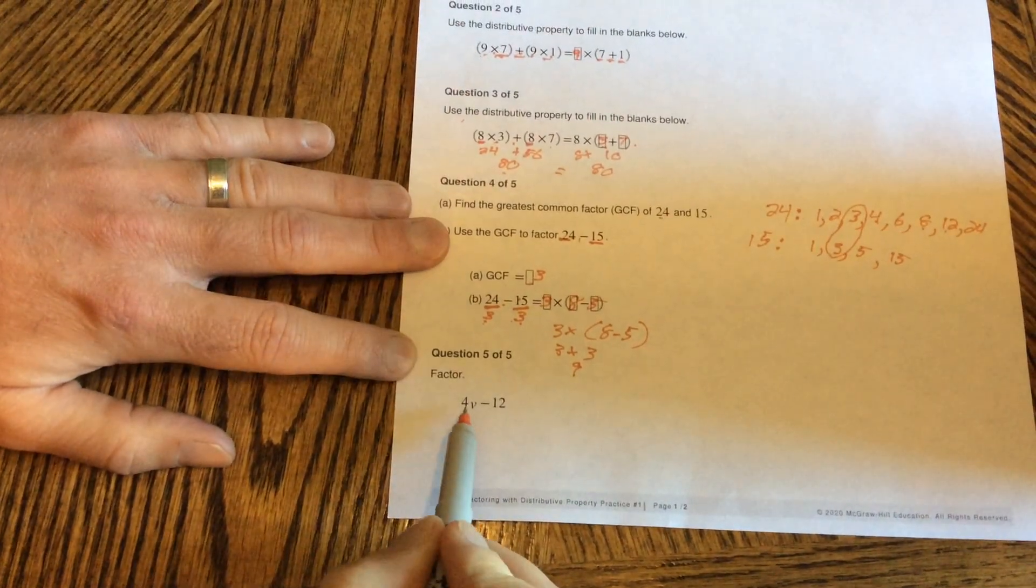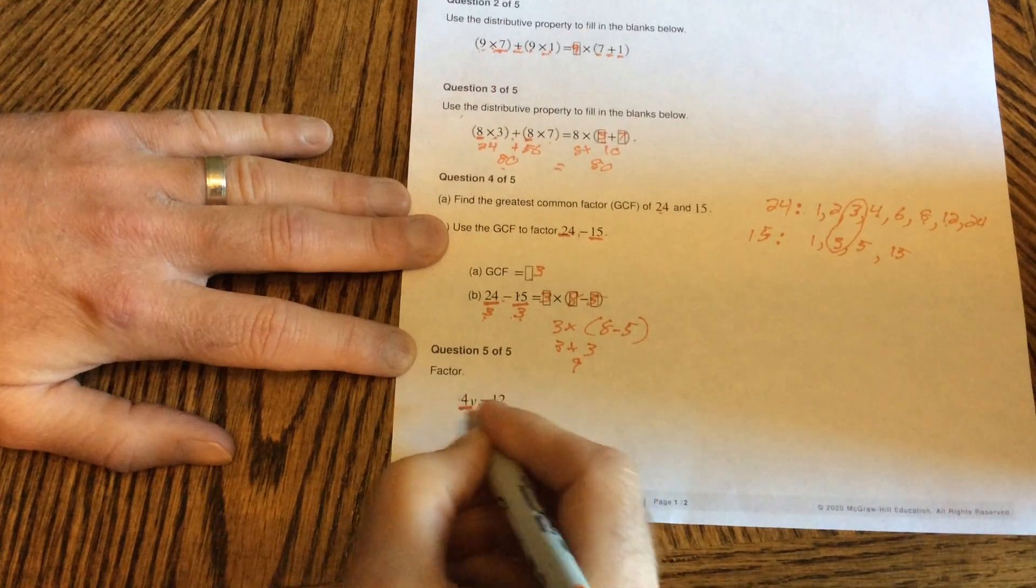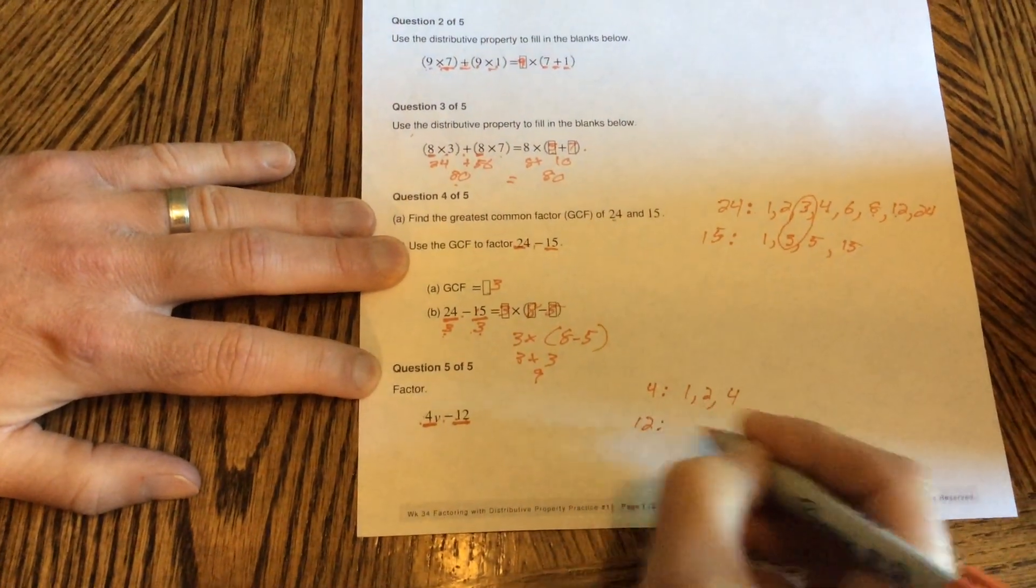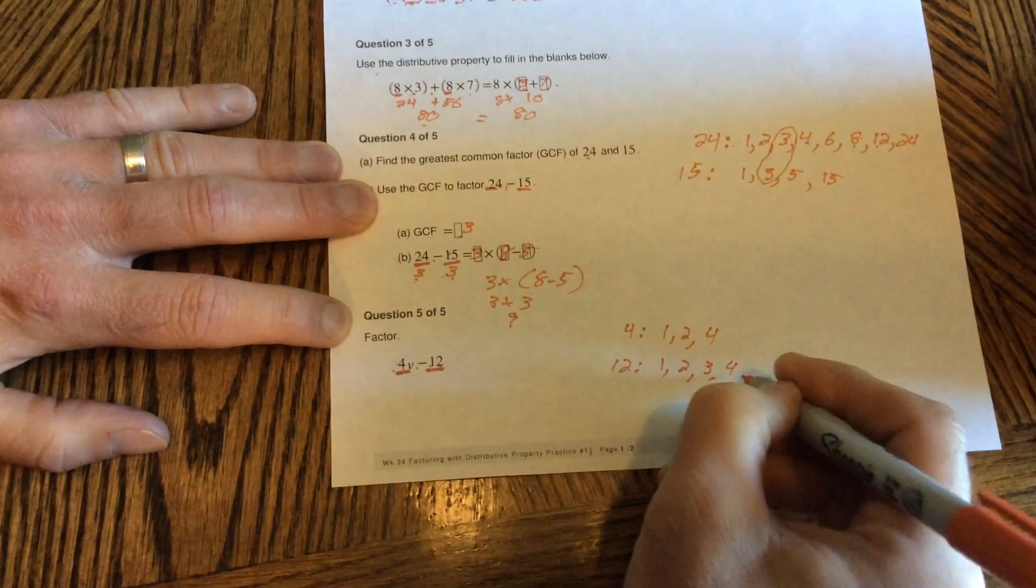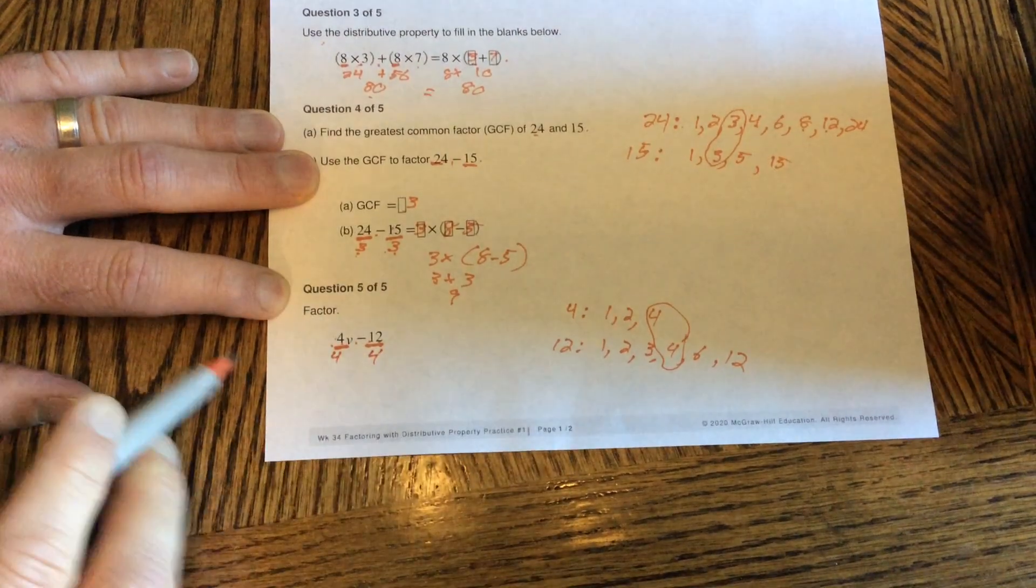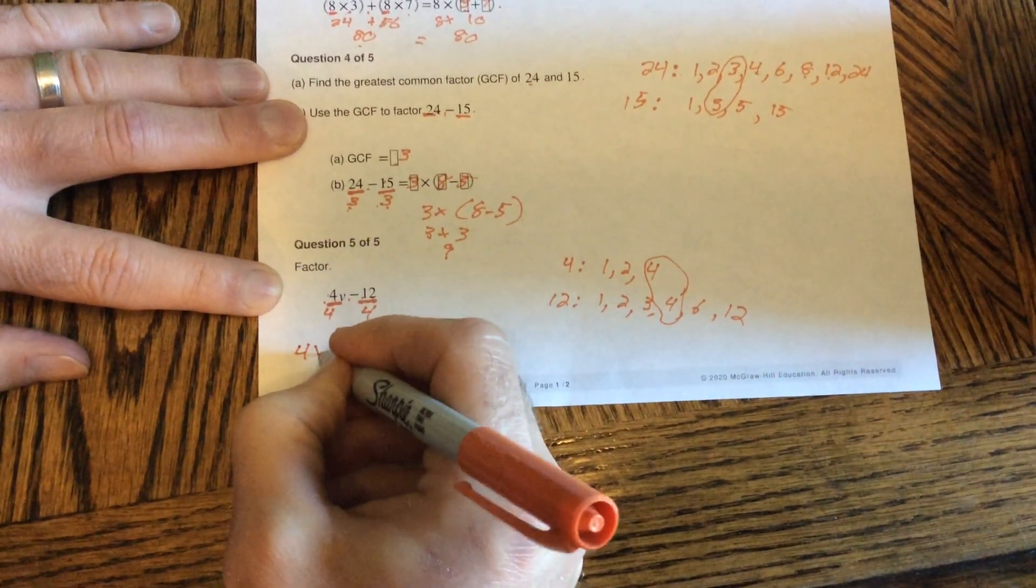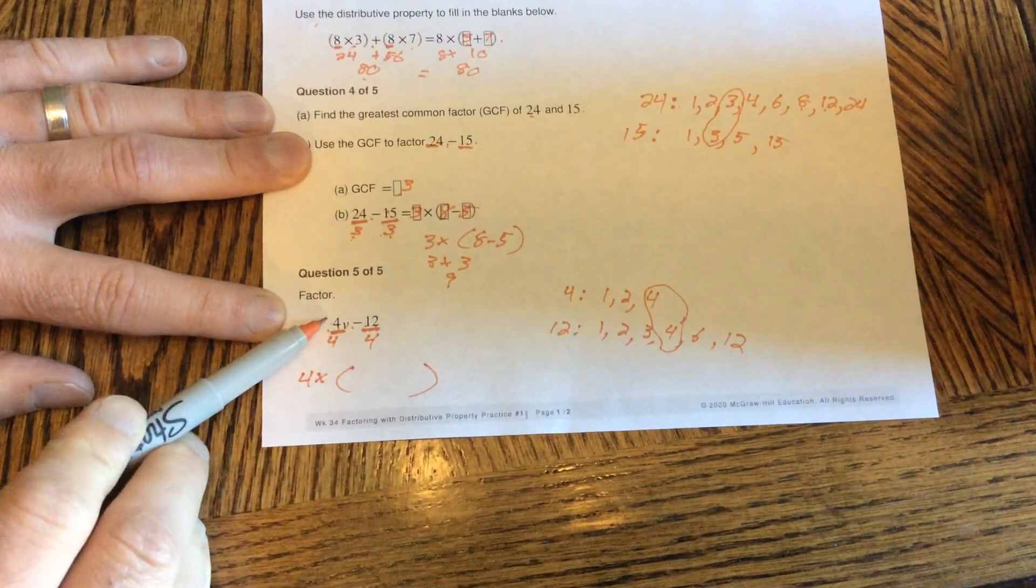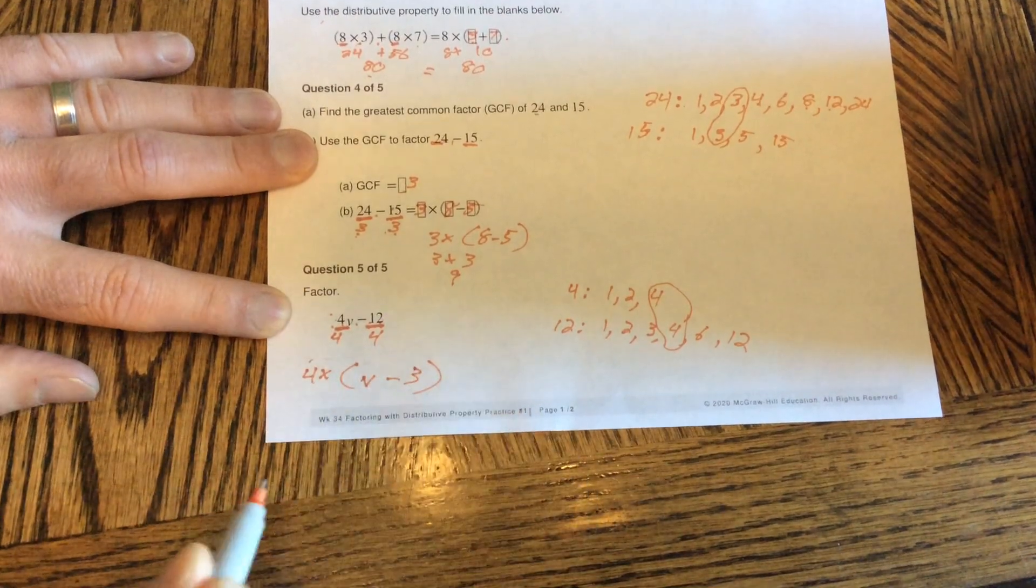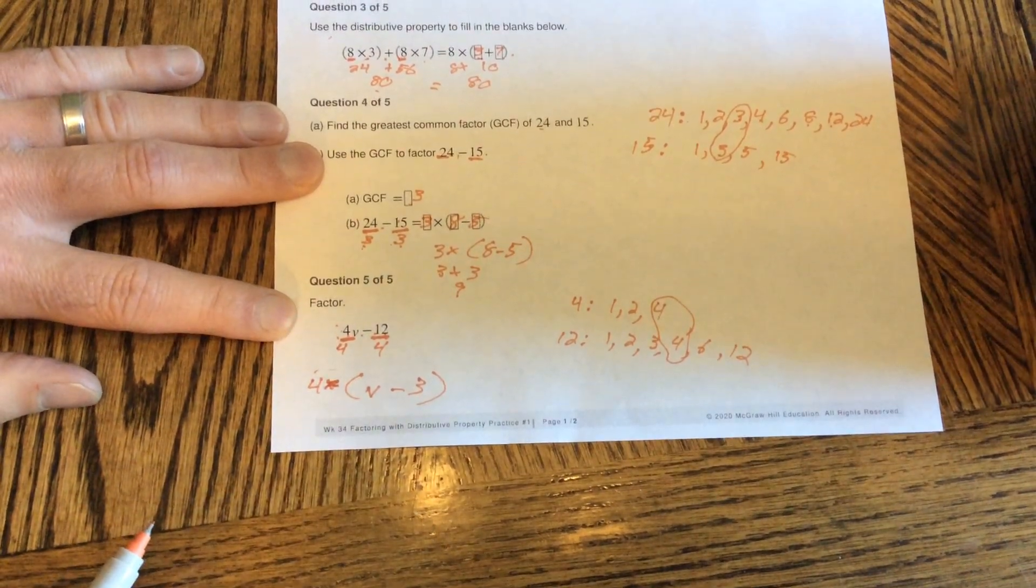One more like this. Factor 4V minus 12. So what am I going to factor out of my greatest common factor of 4 and 12? I could work them out. My factors of 4 are 1, 2, or 4. My factors of 12 are 1, 2, 3, 4, 6, 12. The greatest common is 4. So I'm going to factor 4 out of both of these. I could have factored 2 out of both of them, but that's not the greatest common factor. So I'm going to factor 4 on the outside times. 4V divided by 4 is just V. 1V. 12 divided by 4 is 3. So 4 times V minus 3. I don't have to put this times on. I can just put the 4 right next to the parentheses like we did yesterday.